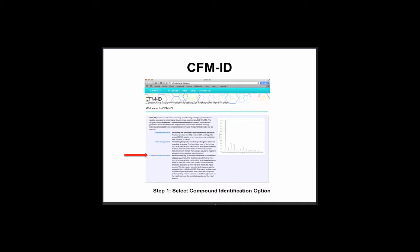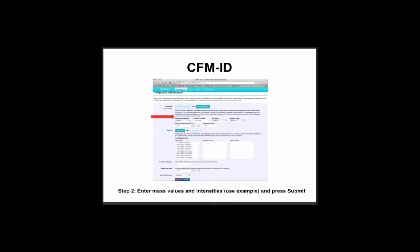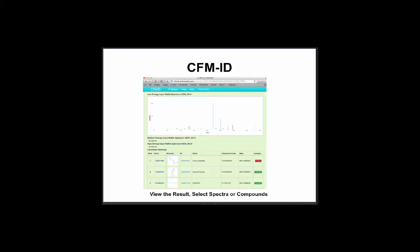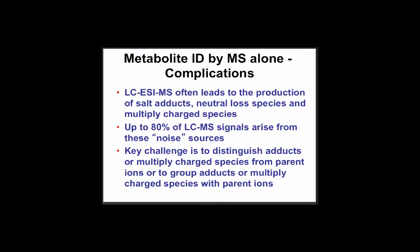The tool has three options: predict an MS-MS spectrum for a known compound, or do compound identification from your spectrum. For compound identification, you enter the mass values and intensities — there's an example you can use. You then specify high, medium, or low fragmentation energies, depending on the type of mass spectrometer you're working with. Once submitted, it does comparison and calibration, then outputs the hits, showing spectral matches with blue and red lines.